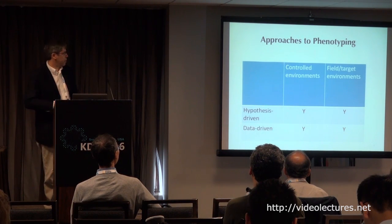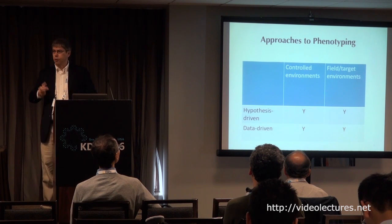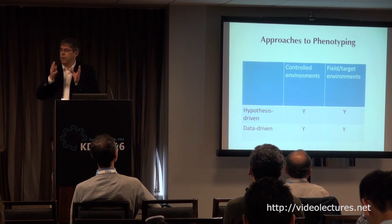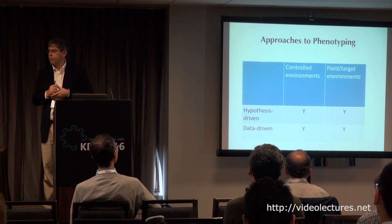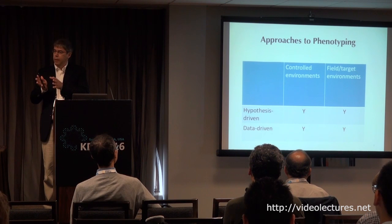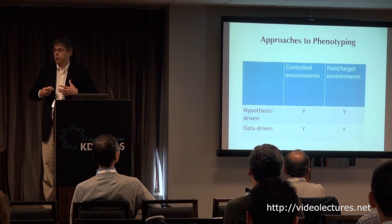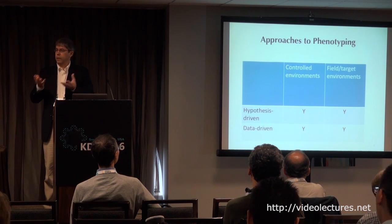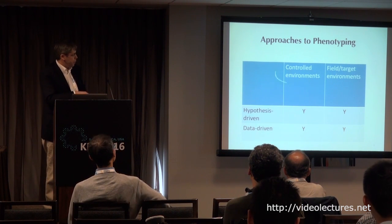There are a number of approaches to phenotyping. We can do phenotyping in controlled environments — the significant advantage is we take environment out of the equation. Phenotype is a function of genotype, environment, and the interaction of genotype by environment. If we grow plants in a growth chamber or highly controlled greenhouse, we can look at the effect of genotype on phenotype in that specific environment. The disadvantage is that plants generally don't spend their lives in greenhouses — they live in fields. So both approaches have roles.